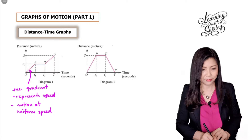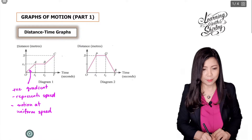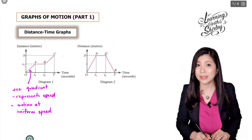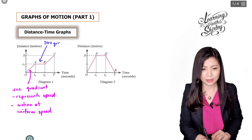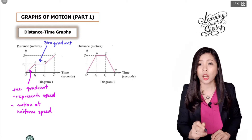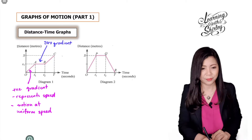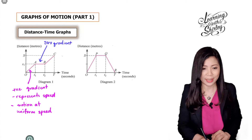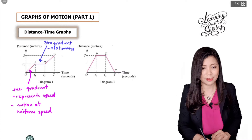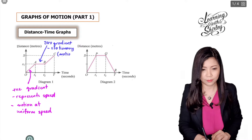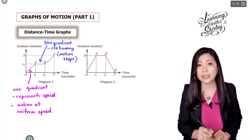Now let's look at AB. AB is a horizontal line, which means the gradient is zero. A zero gradient means that the object is stationary — stationary means not moving — and so the motion stops.